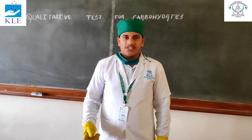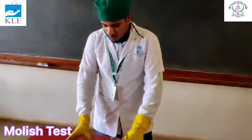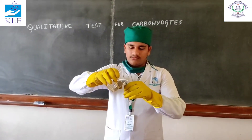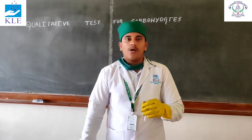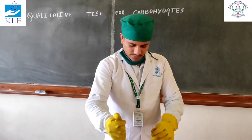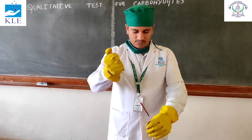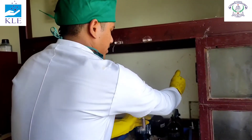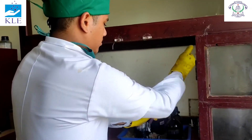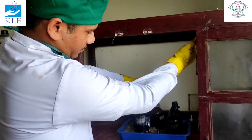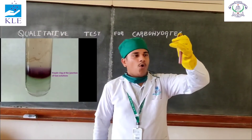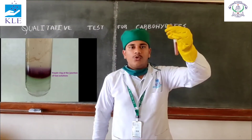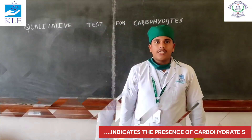First test — Molisch test. Take 2 ml of sample solution and add 2 drops of Molisch reagent, then add 2 ml of concentrated sulfuric acid carefully along the sides of the test tube. A violet ring will appear at the junction of the two liquids, indicating the presence of carbohydrates.